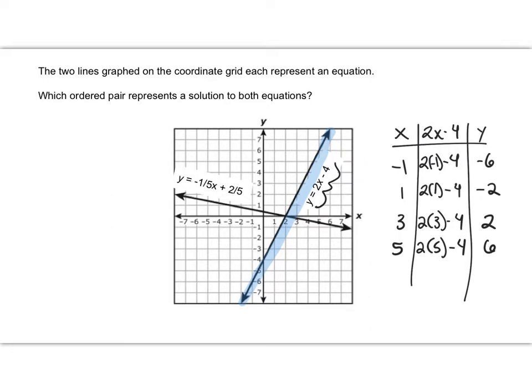Check it out. Here's negative 1, negative 6, here's 1, negative 2, here's 3, 2, and here's 5, 6. All of the points are on the line. That's because these ordered pairs are solutions to this linear equation. They cause it to be true.